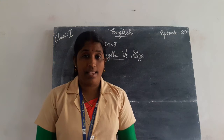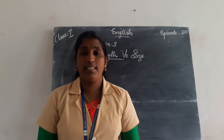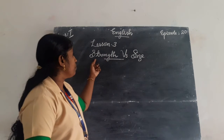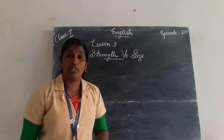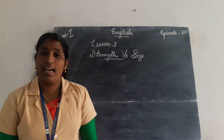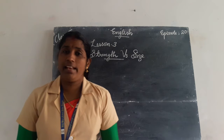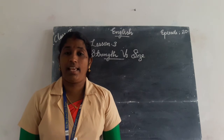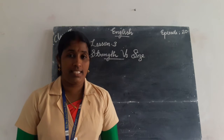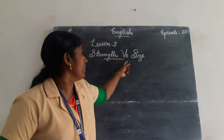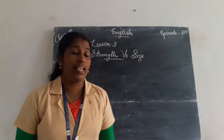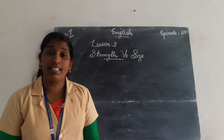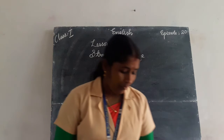What is the word? Strength vs. Size. Strength is spelled S-T-R-E-N-G-T-H. Size is spelled S-I-Z-E. Strength vs. Size.